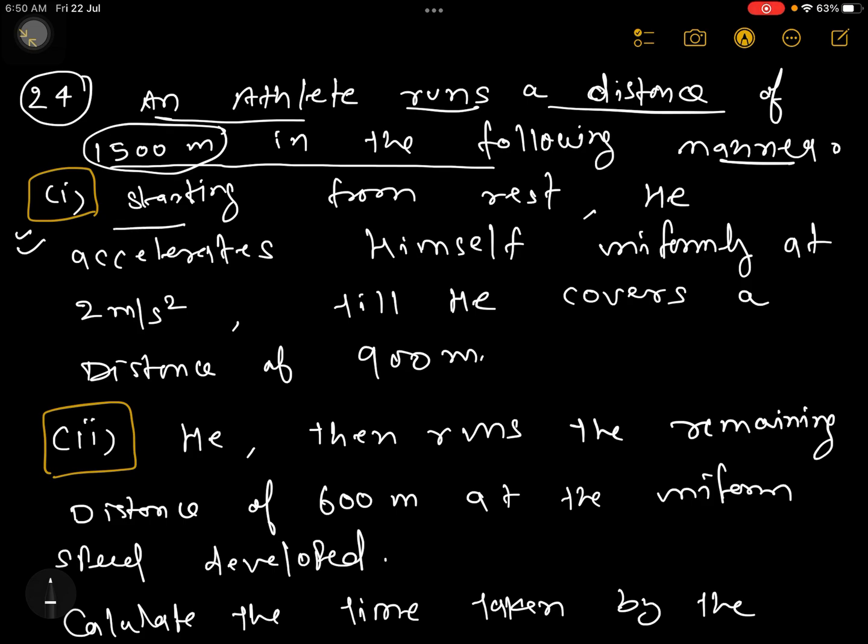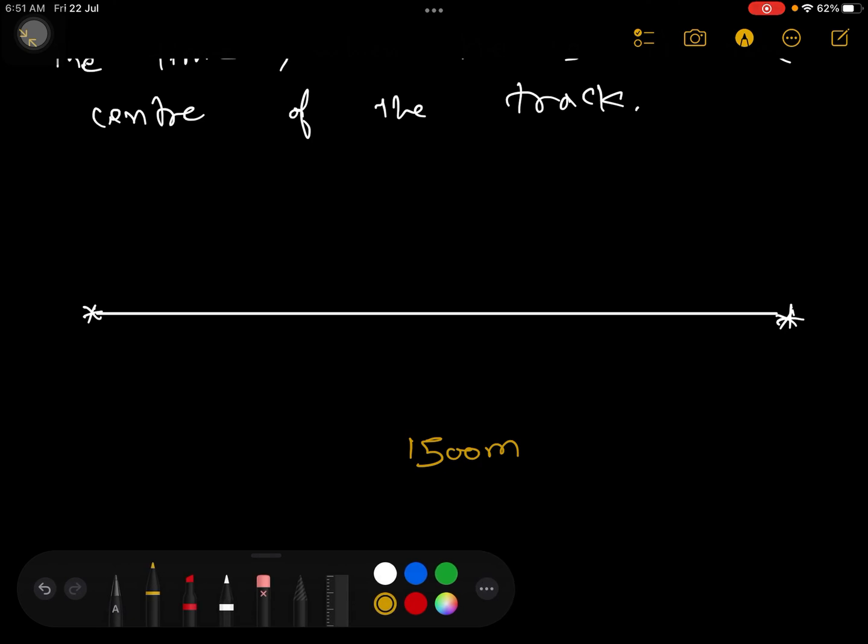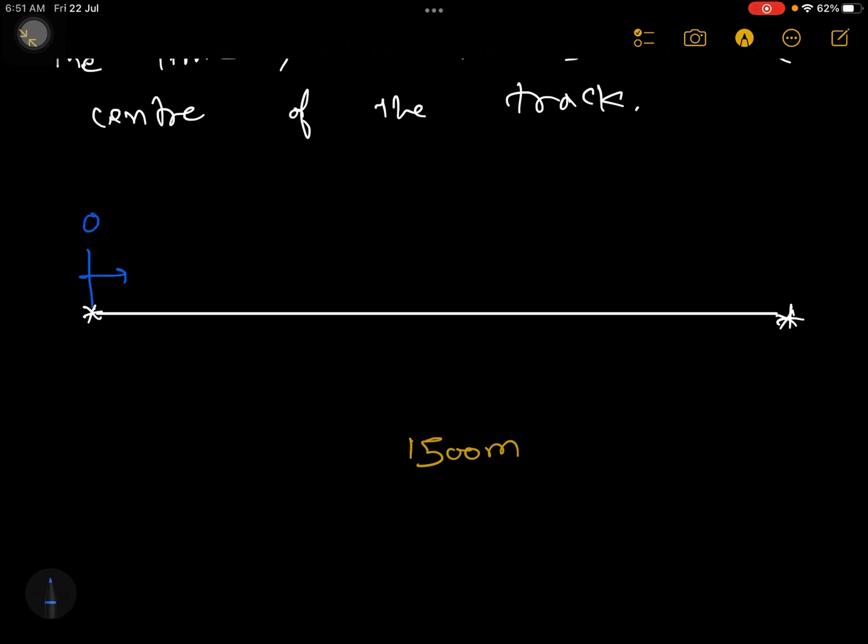The first manner is starting from rest, he accelerates himself uniformly at 2 meter per second square till he covers a distance of 900 meter. Suppose from here the athlete is starting and has to go here. This total distance is actually 1500 meter, but they are saying the athlete is starting from here with zero velocity and then accelerating. So speed is increasing, but the acceleration is given as 2 meter per second square. This phenomena will keep on happening only till 900 meter.